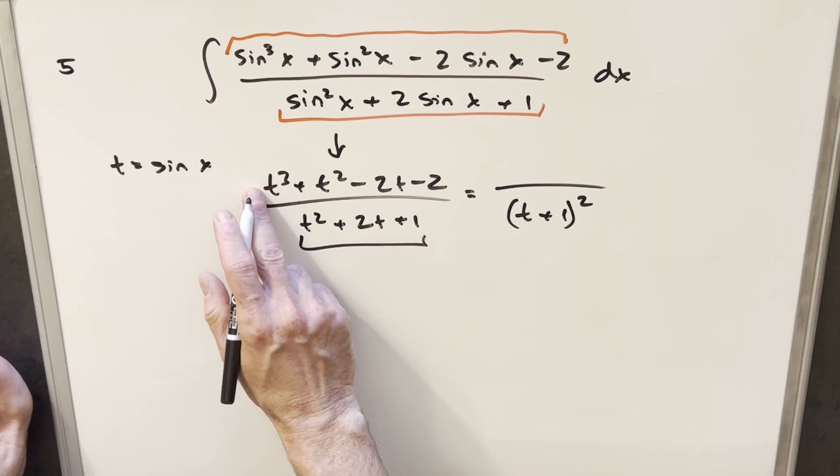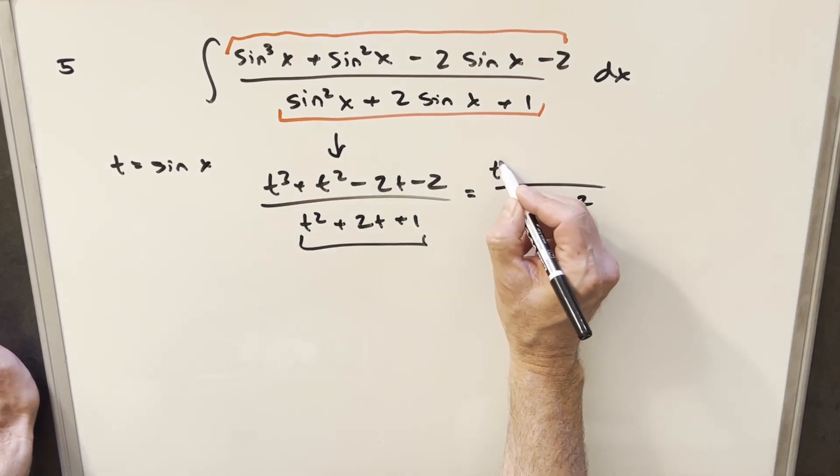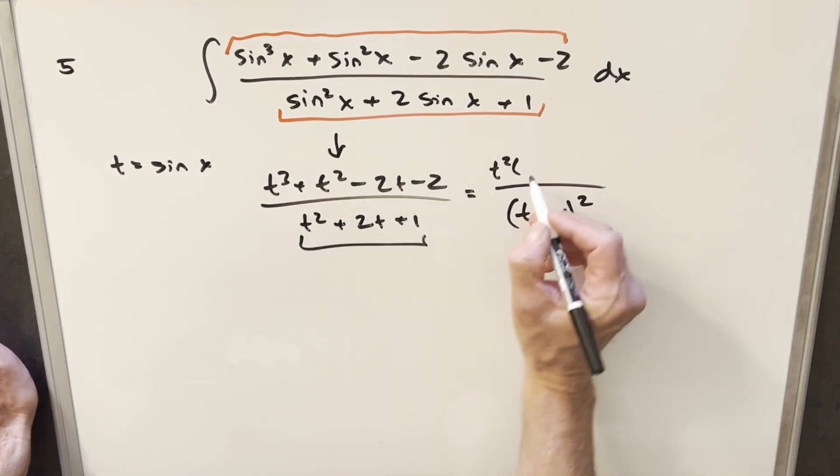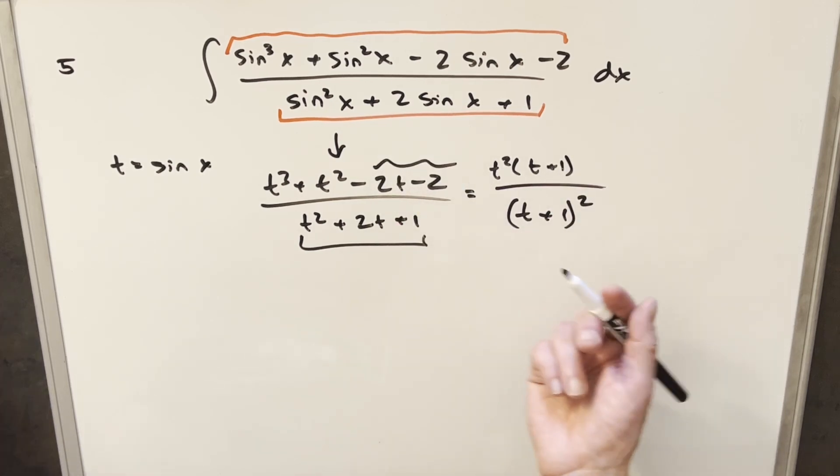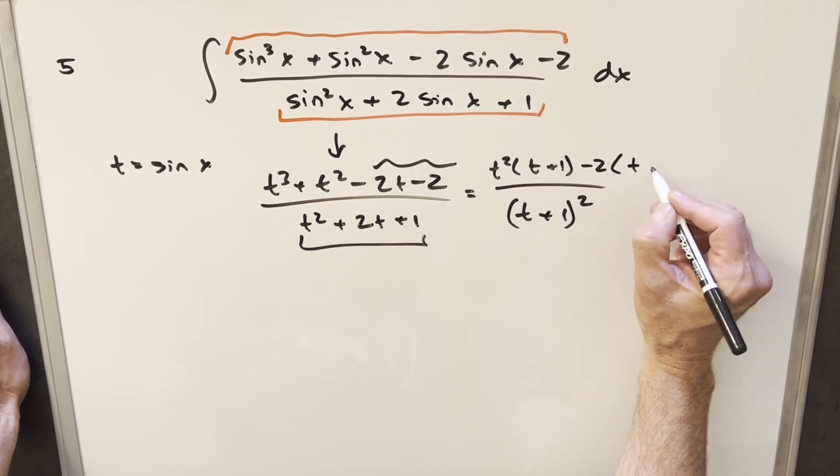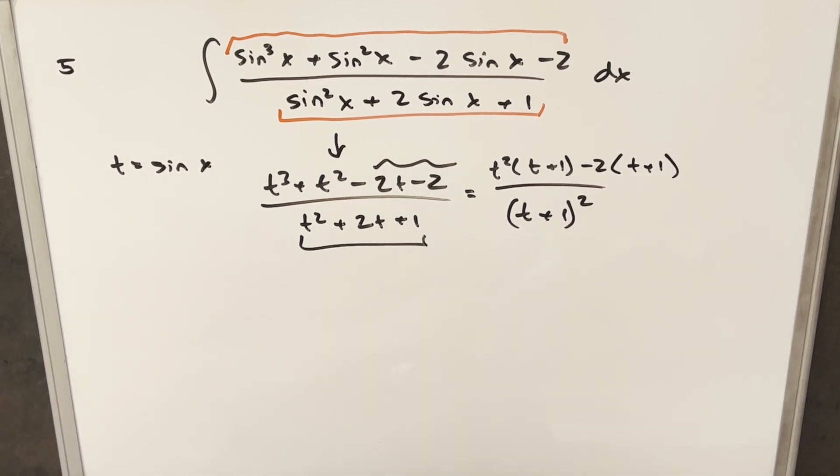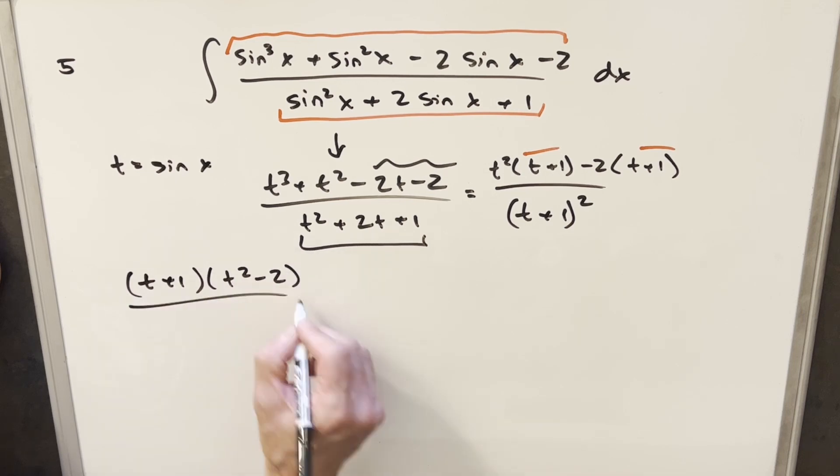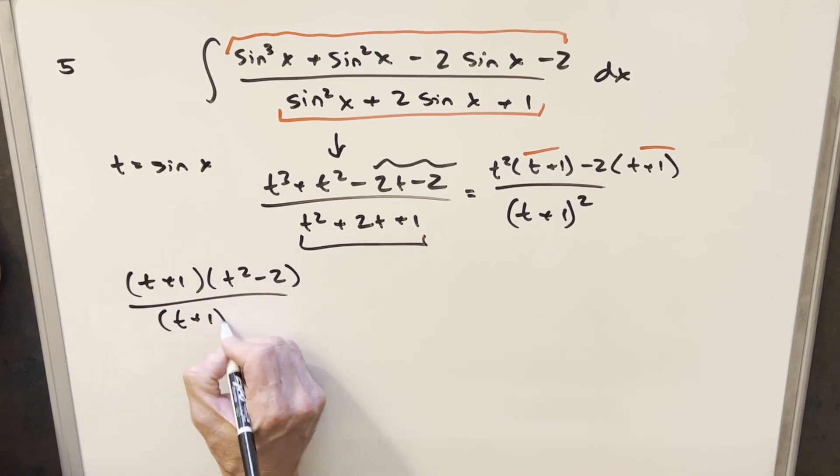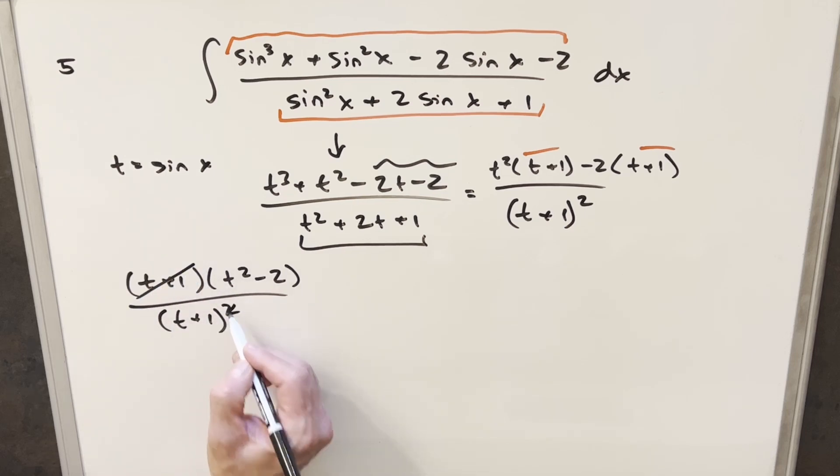Then in the numerator, what I can do for these first two terms, I can actually factor a t squared out here. So this is going to become t squared times t plus 1. And then on these last two terms, I'll just factor a minus 2 out, but that's also going to give me a t plus 1 right there. So what's going to happen, you may notice, is that we have this t plus 1 term in common. So what I'm going to do is just factor that out. We'll have a t plus 1 we pull out, and that's going to give me, for my second term here, t squared minus 2 all over t plus 1 squared. But then we can cancel this with one of these.